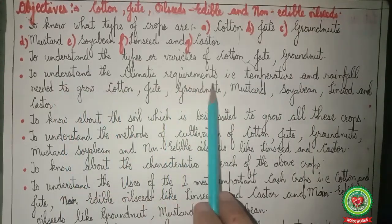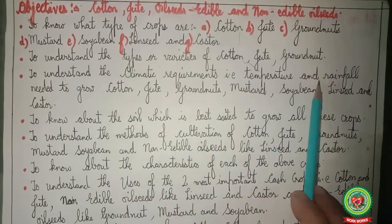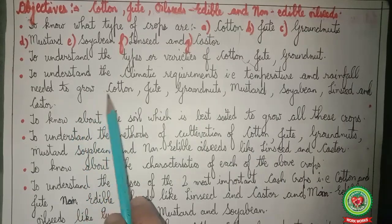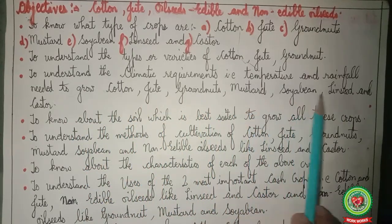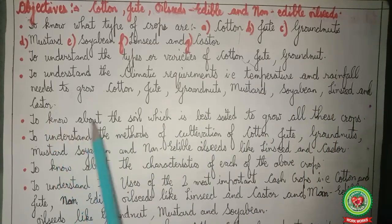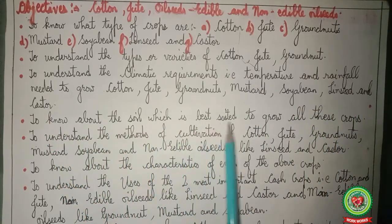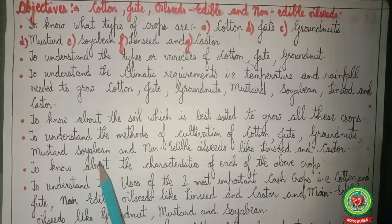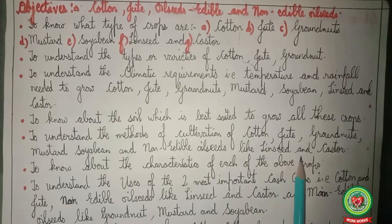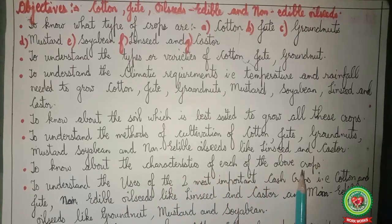We also studied the climatic requirements — temperature and rainfall — needed to grow cotton, jute, groundnuts, mustard, soya bean, linseed and kester; the soil best suited for all these crops; and the methods of cultivation of cotton, jute, groundnuts, mustard, soya bean, and non-edible oil seeds like linseed and kester, as well as the characteristics of each of these crops.